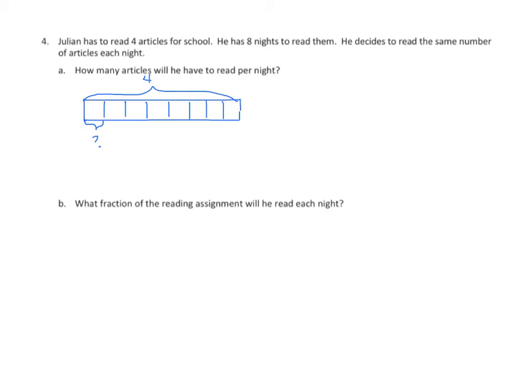We have to find out what this is, so we're going to use this format where we talk about units. Eight units, because we have eight partitions to our tape diagram, equals four. We want to find one unit. One unit equals four divided by eight. That's the same as four eighths. We can simplify that to one half. Julian needs to read one half an article each night.